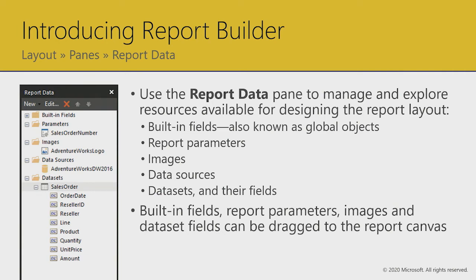The user ID built-in field is very important — when we talk about data permissions, we'll use it to filter data according to what a user is allowed to see. Report parameters are defined here as well — you can create and edit them. Images embedded into the report are available here too. Data sources and data sets, covered in the next module, are also here. For example, there may be a data source for AdventureWorks DW 2016, a single data set named sales order, and when expanded, it presents the fields used to lay out report designs.